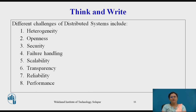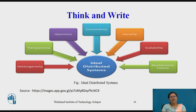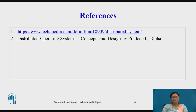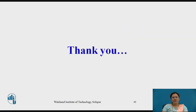The ultimate goal of ideal distributed computing is to maximize performance by connecting users and IT resources in a cost-effective, transparent, and reliable manner. When we achieve all these challenges, we can say that the system is an ideal distributed system. These are the references I have referred to for this particular topic. Thank you one and all.